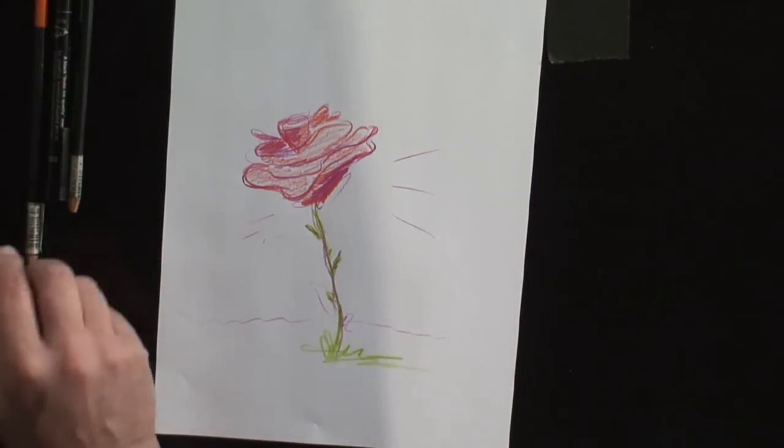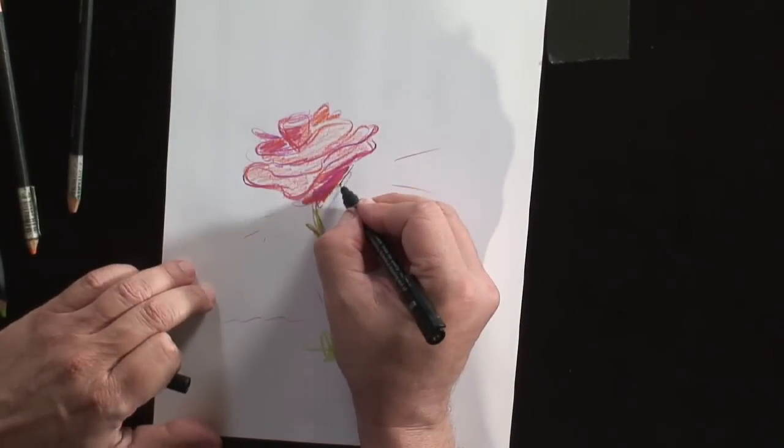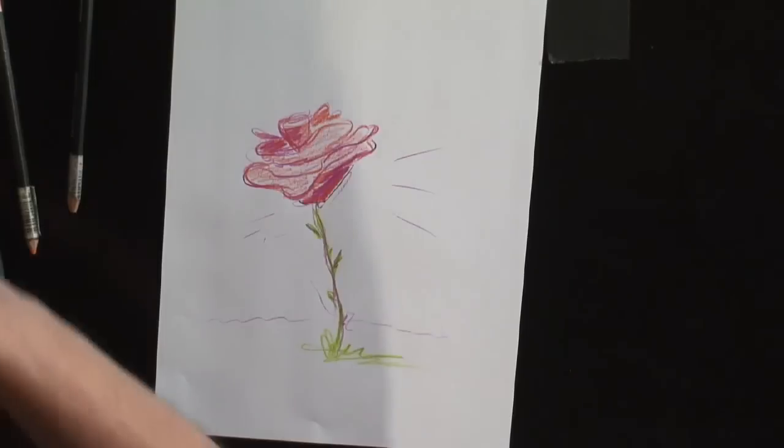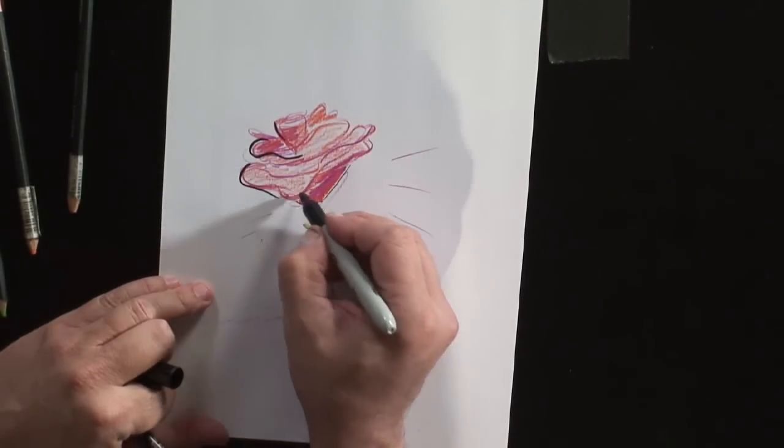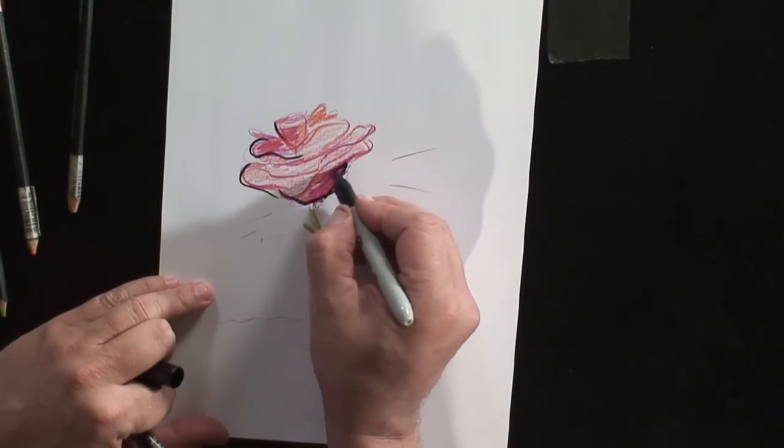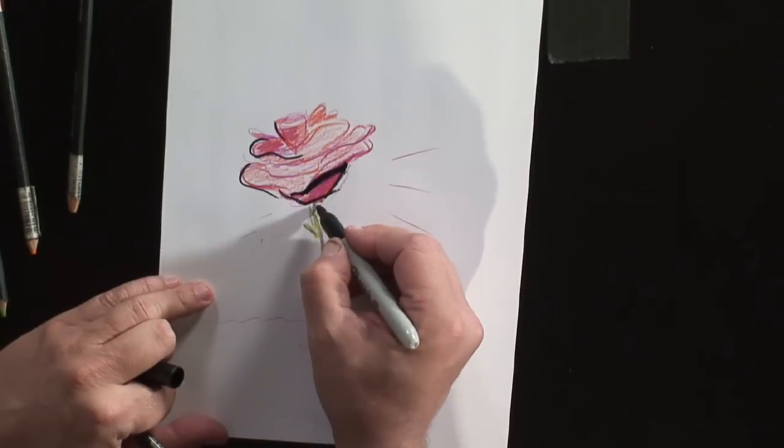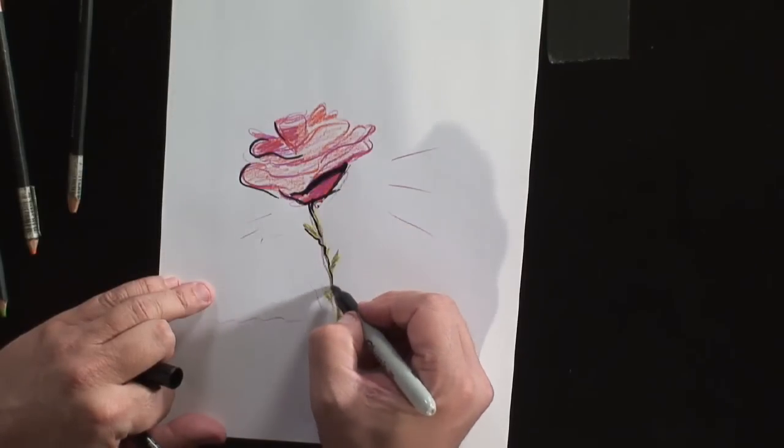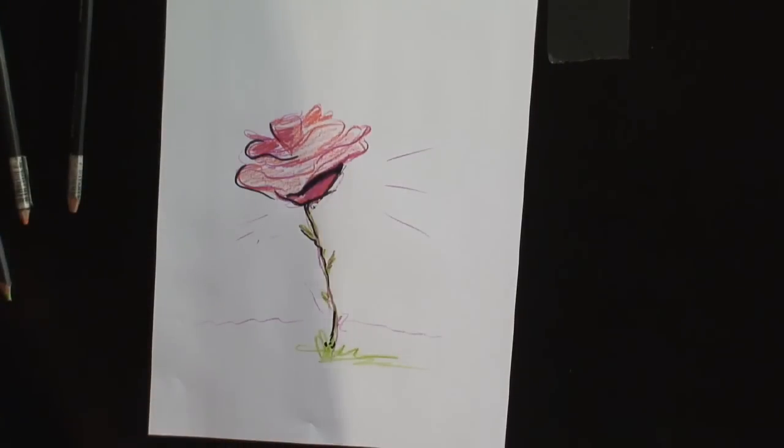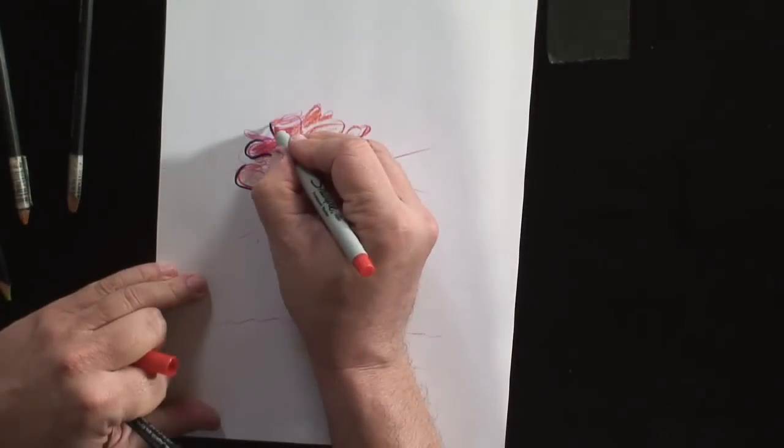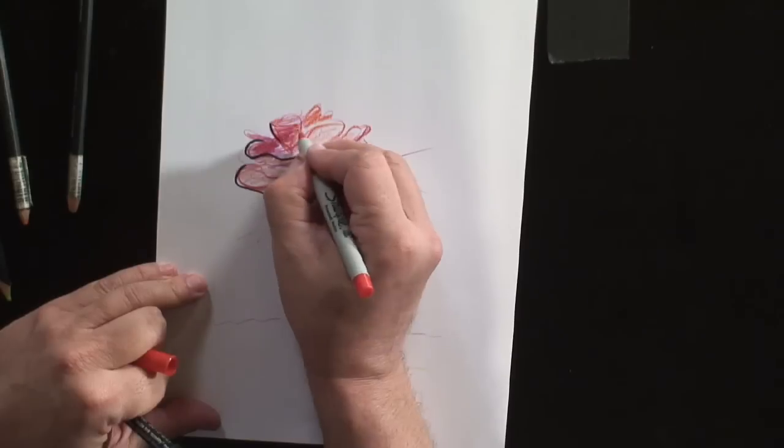And go back in and add some little details with black, use a little thicker line there, and various highlights. And then as you go in and add some of the details there, it takes even more shape. You can use a marker to make it a more brilliant red.